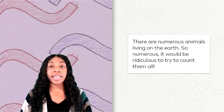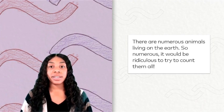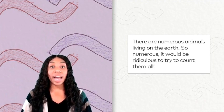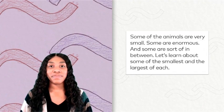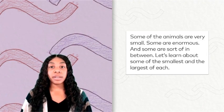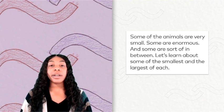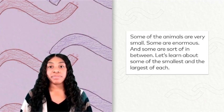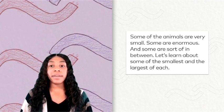There are numerous animals living on the earth. So numerous, it would be ridiculous to try to count them all. Some of the animals are very small. Some are enormous. And some are sort of in between. Let's learn about some of the smallest and the largest of each.